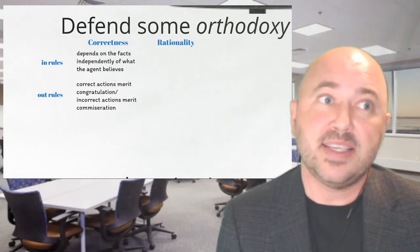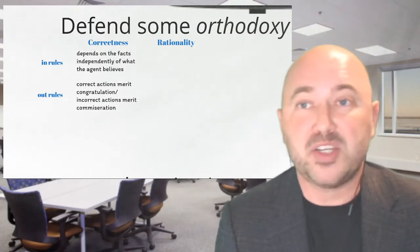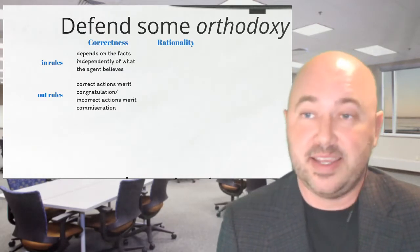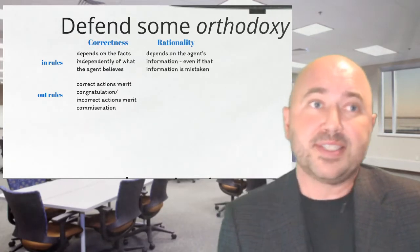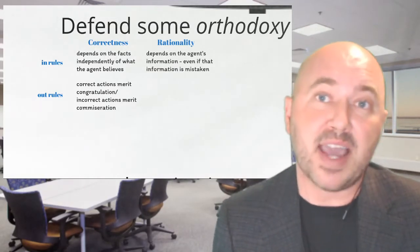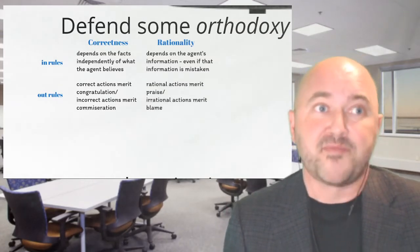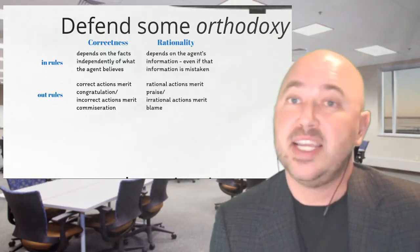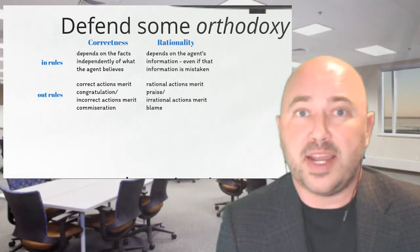The out-rules for correctness tell us that it matters for congratulating or commiserating with someone: if they made the correct choice, you congratulate them; if incorrect, you commiserate — but it reflects on their luck, not on them. Whereas with rationality, the orthodox view tells us the rationality of an act can depend on an agent's information independently of the facts — even if their information is mistaken. And the out-rules for rationality tell us that rational actions merit praise, and irrational actions merit something like blame.